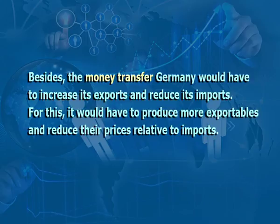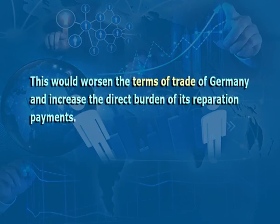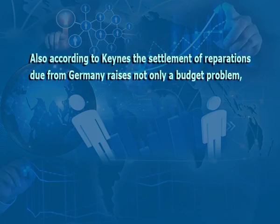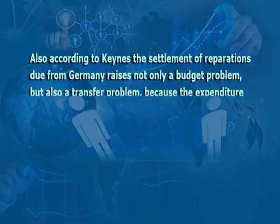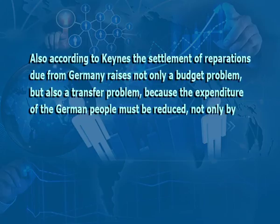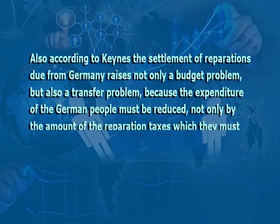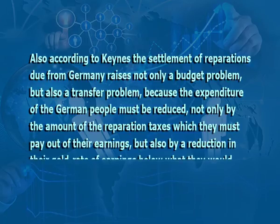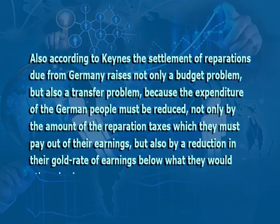Keynes pointed out that the reparation payments imposed on Germany by the allies would not only place a monetary burden but also a much larger real burden on Germany. Besides the money transfer, Germany would have to increase its exports and reduce its imports. For this it would have to produce more exportables and reduce their price relative to imports, which would worsen the terms of trade of Germany and increase the direct burden of its reparation payments.